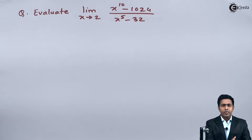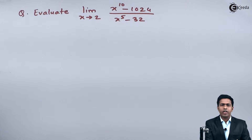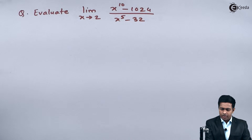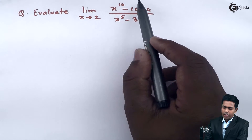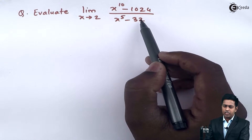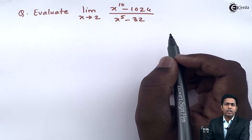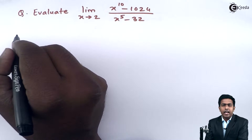Hello friends. In this problem we have to evaluate the limit as x tends to 2 of x raised to 10 minus 1024, all upon x raised to 5 minus 32. Now before solving this limit, let us observe the given question. We have an algebraic function, and whenever we have an algebraic function in a limit, we always start with the direct method.